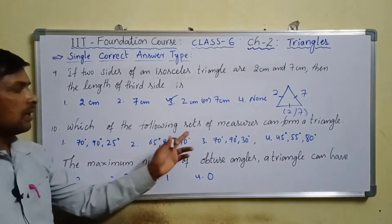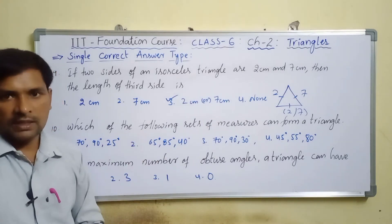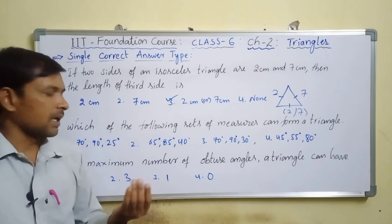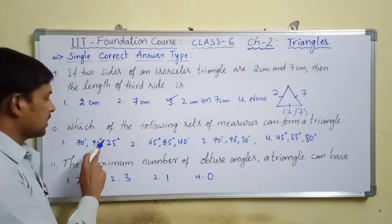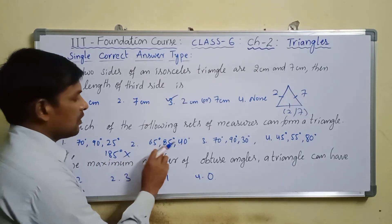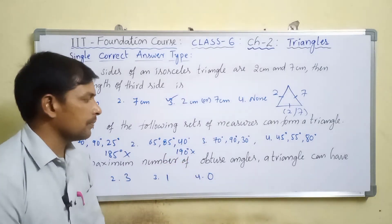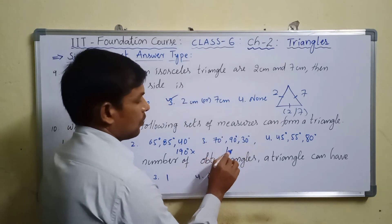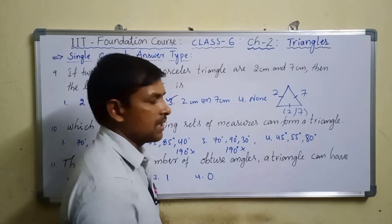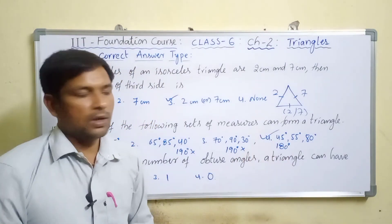Question number ten: which of the following sets of measures can form a triangle? The sum of three angles must equal 180 degrees. Checking: 70+90+25 = 185 — not valid. 65+85+40 = 190 — not valid. 70+90+30 = 190 — not valid. 45+55+80 = 180 degrees — valid. So the fourth set can form a triangle.